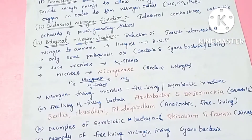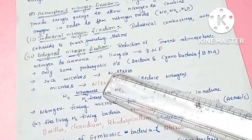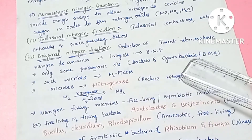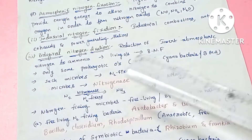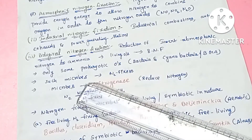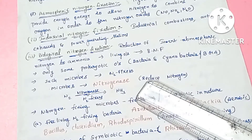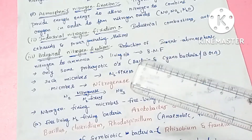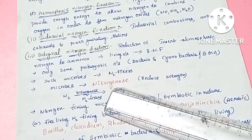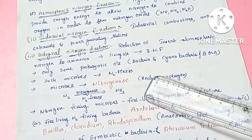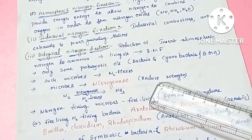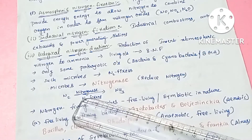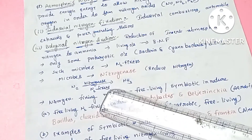Biological nitrogen fixation is carried out only by prokaryotic organisms — bacteria and cyanobacteria. Many prokaryotes are capable of nitrogen fixation. Dinitrogen is converted into ammonia by the enzyme nitrogenase, which is produced by nitrogen-fixing microorganisms.